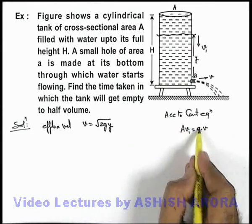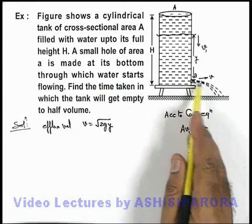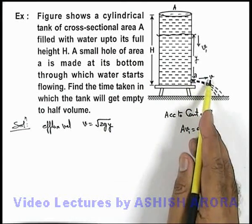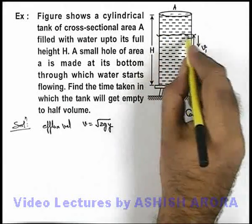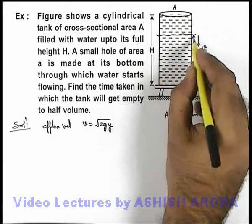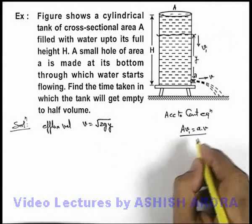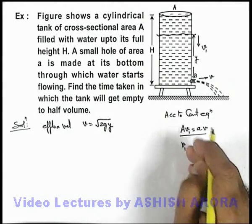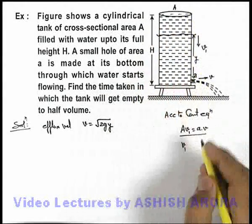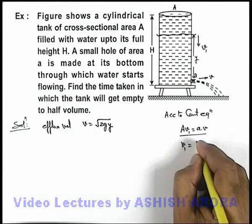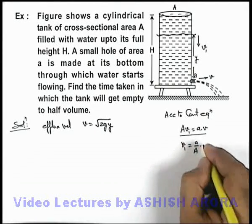If small a is the area of cross-section of the hole and fluid is coming out with speed v, the water level which is having cross-sectional area A will move down with speed v1, which can be given as v1 = (a/A)v.